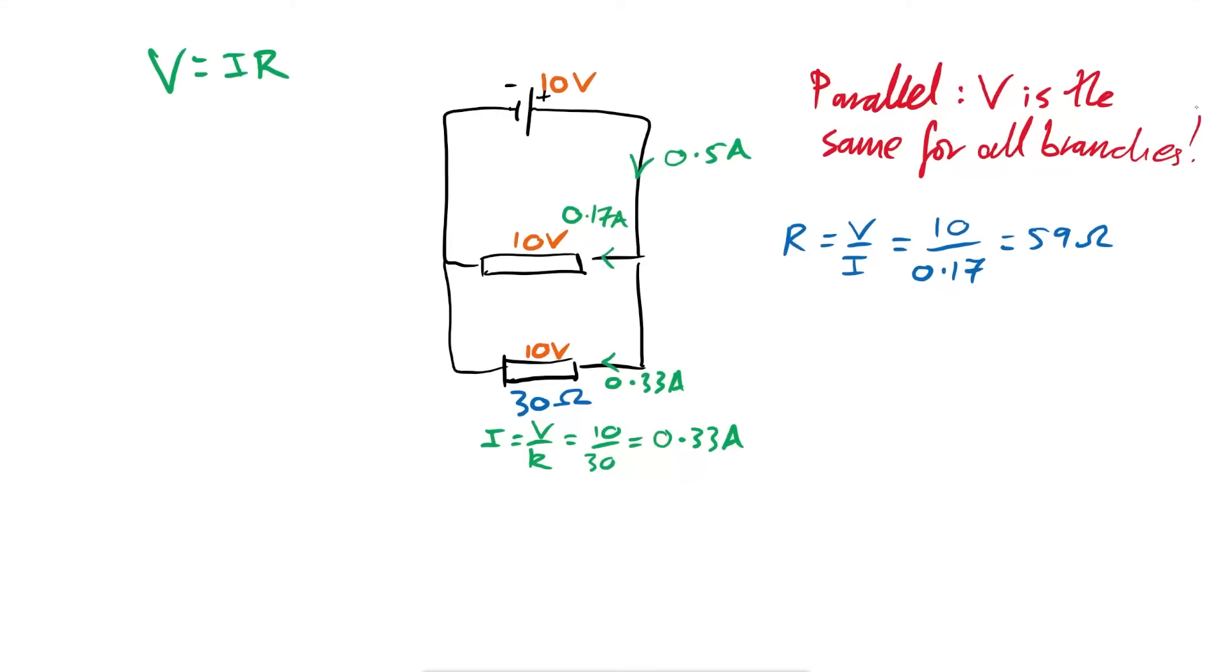So there we go. Again, it was all thanks to this rule here. Parallel, V is the same for all branches. Then of course, we use the other rule as well. Current is always conserved at junctions. In other words, whatever current goes into a junction here, we have to have the same amount coming out altogether.